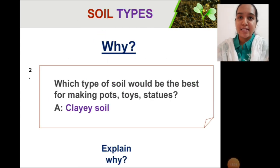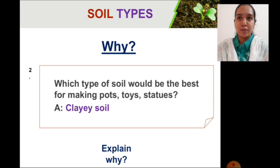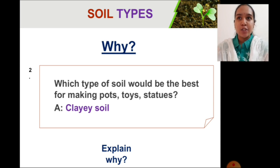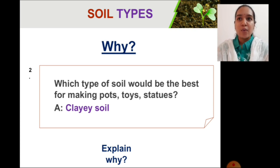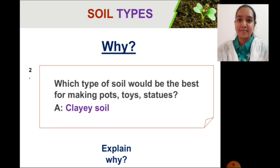The next assignment is: you all know the famous characters Bojo and Paheli from your textbook. Bojo had a doubt about which type of soil would be best for making pots, toys, and statues. After understanding today's class, you can answer Bojo's question. I have given the answer here, but your work is to explain why — why clay soil is the best type of soil to make these artworks. Understand its characteristics and explain it in detail in your science notebook. In the next class we will continue this lesson. Thank you, children. I would like to see you soon. Bye.